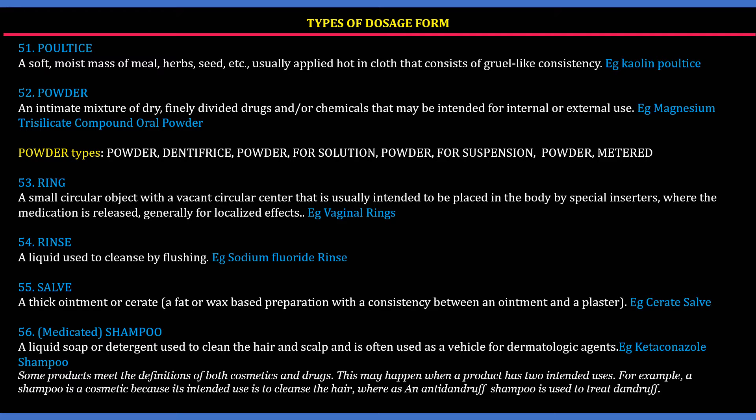53. Ring: A small circular object with a circular center that is placed in the body by special inserters, where the medication is released for localized effects. Example: vaginal rings. 54. Rinse: A liquid used to cleanse by flushing. Example: sodium fluoride rinse.